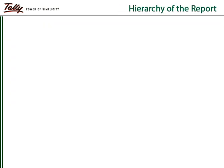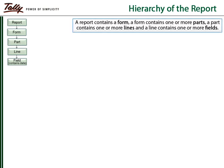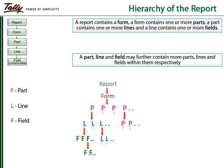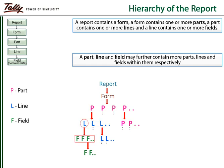The hierarchy of a report starts from the form and ends in the field, which is the container of data. Different colors are used for a part, line, and field to understand the concept better. A form contains a number of parts.